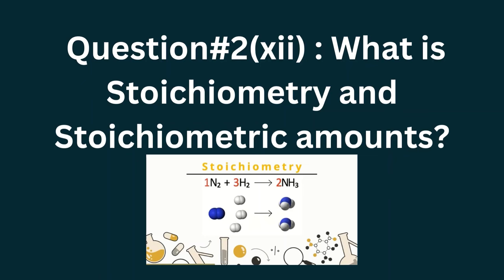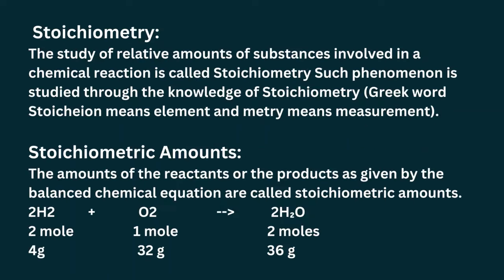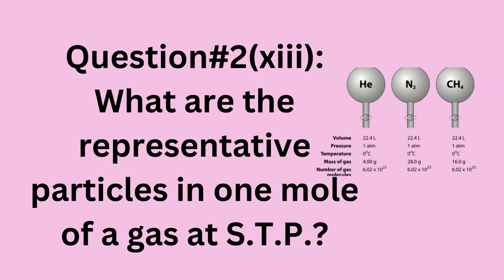Question number two, part twelve: what is stoichiometry and stoichiometric amounts? Stoichiometry: the study of relative amounts of substances involved in a chemical reaction is called stoichiometry. The Greek word 'stoichion' means element and 'metri' means measurement. Stoichiometric amounts: the amounts of reactants or products as given by the balanced chemical equation are called stoichiometric amounts. For example: 2H₂ + O₂ → 2H₂O — 2 moles, 1 mole, 2 moles; 4 g, 32 g, 36 g.